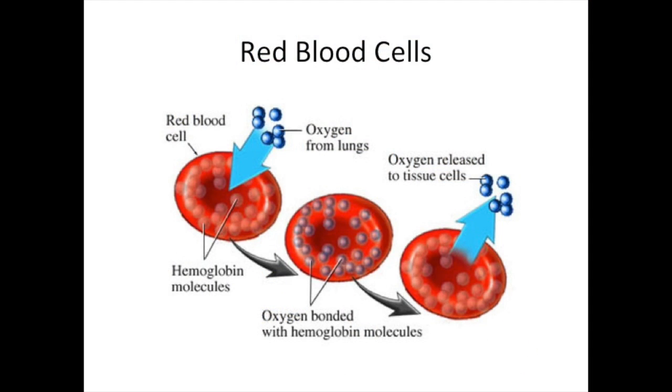Red blood cells collect oxygen from the air you breathe into your lungs and travel to your heart which then pumps the cells carrying oxygen to the rest of your body. The oxygen is then extracted from the red blood cells by organs to perform normal functions of the body. The red blood cells then travel back to the lungs to unload carbon dioxide and pick up more oxygen.